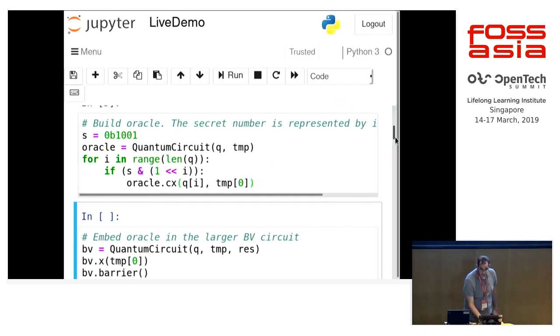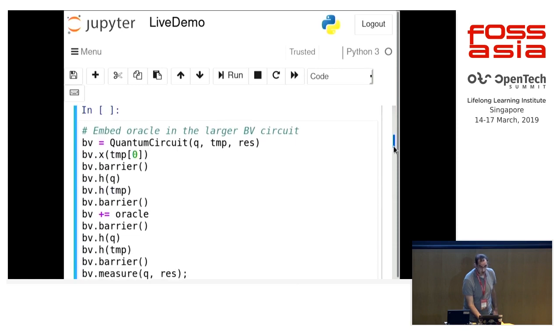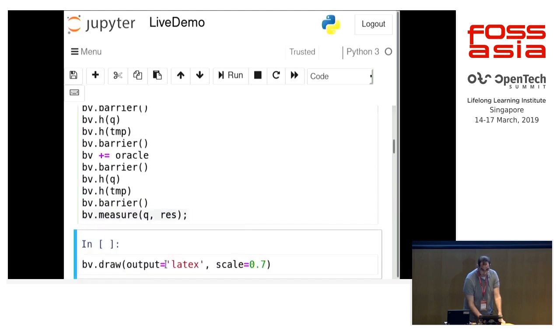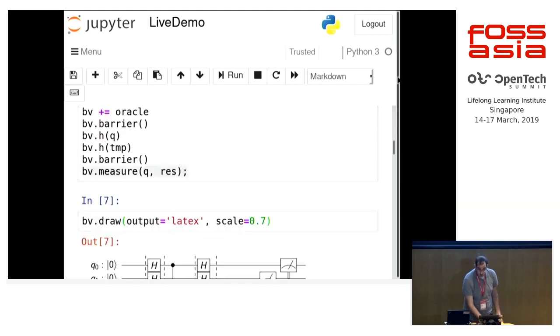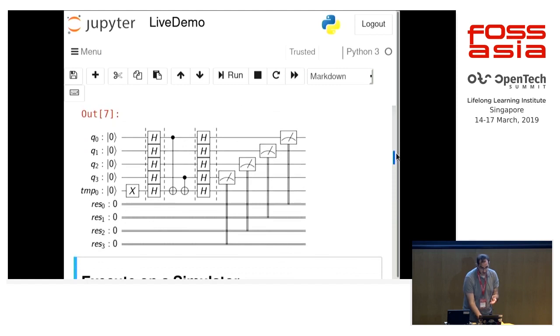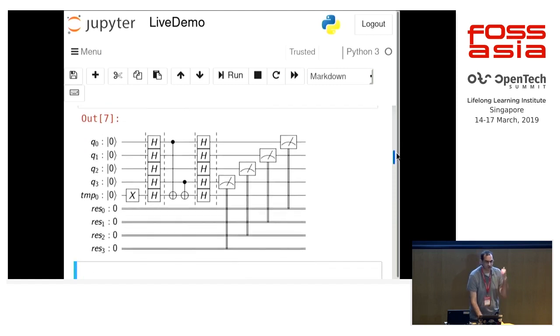Then we plug that into our bigger circuit, where we apply the X, then our Hadamards on everything. Then we add our Oracle function. Then we apply the Hadamards again, and we measure. And then we can draw the circuit to make sure what we wrote in Python code to represent this matches what we have in our head. And here it does match, because I copied the code from this for my presentation.